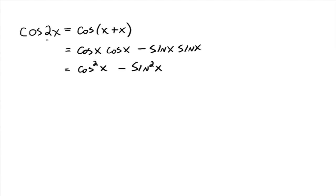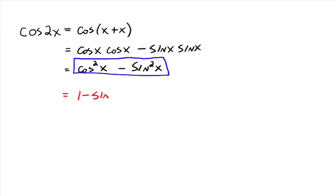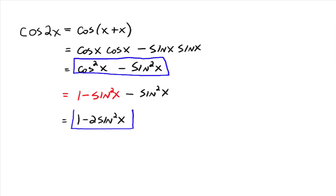That gives us our next identity: cosine of 2x is equal to cosine squared x minus sine squared x. That's one form. Also, cosine squared x could be rewritten as 1 minus sine squared x from the Pythagorean identities, and then we subtract another sine squared. So all of this goes down to 1 minus 2 sine squared x — another identity that cosine of 2x is equal to.